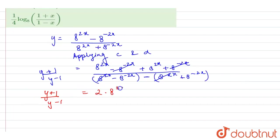Okay, and this will also get cancelled. If we take the minus sign over here, we get y plus 1 upon 1 minus y is equal to 8 to the power 4x because this 8 to the power 2x will go in the numerator.